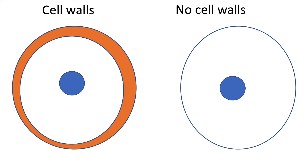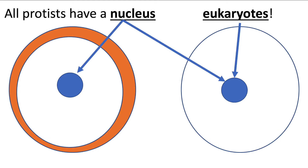Some protists have cell walls, and some protists do not have cell walls. All protists have a nucleus — every protist has a nucleus. It is a eukaryotic cell, like plant, animal, and fungi cells. Every protist cell has a nucleus.